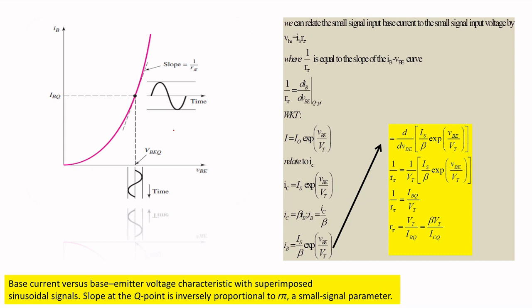The notations are important to understand. For DC values, everything should be written in capital letters. For AC current and voltage terms, you use small characters. For a combination of AC and DC — the total instantaneous value — the main letter will be capital and the subscript will be small.